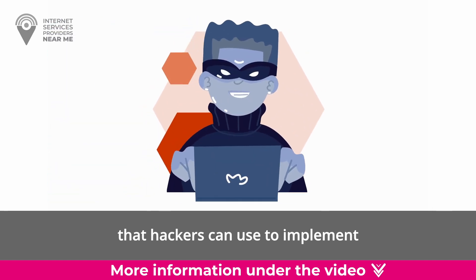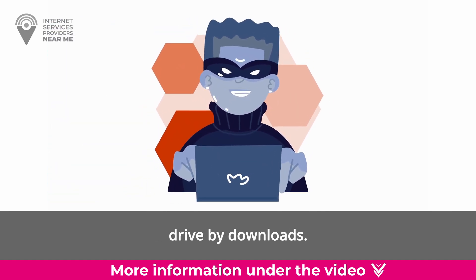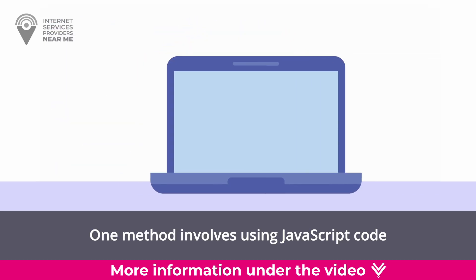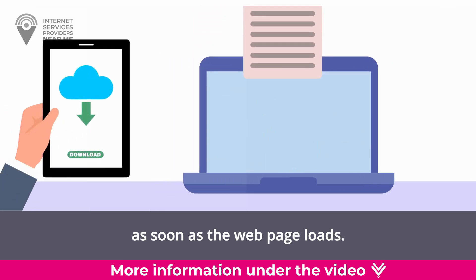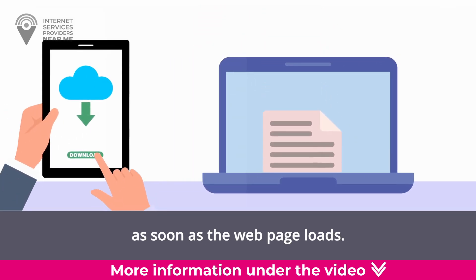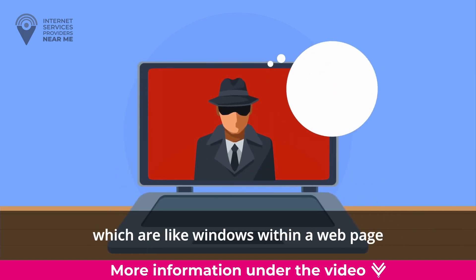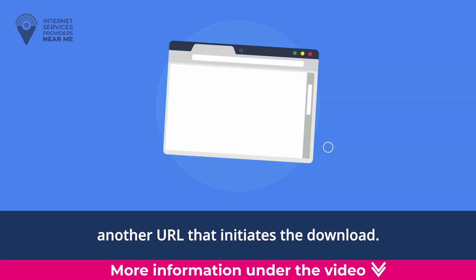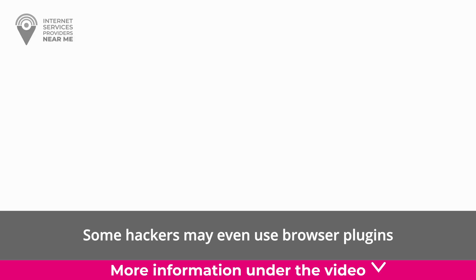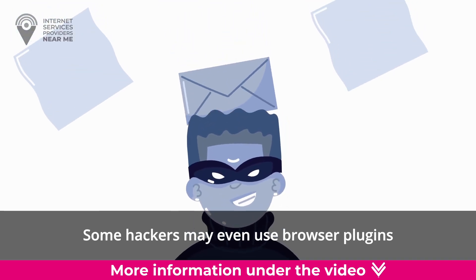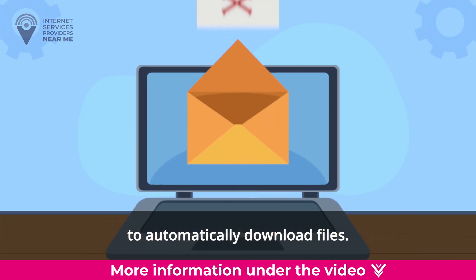There are different techniques that hackers can use to implement drive-by downloads. One method involves using JavaScript code that triggers a download as soon as the web page loads. Another method uses iframes, which are like windows within a web page, to reference another URL that initiates the download. Some hackers may even use browser plugins or extensions to automatically download files.